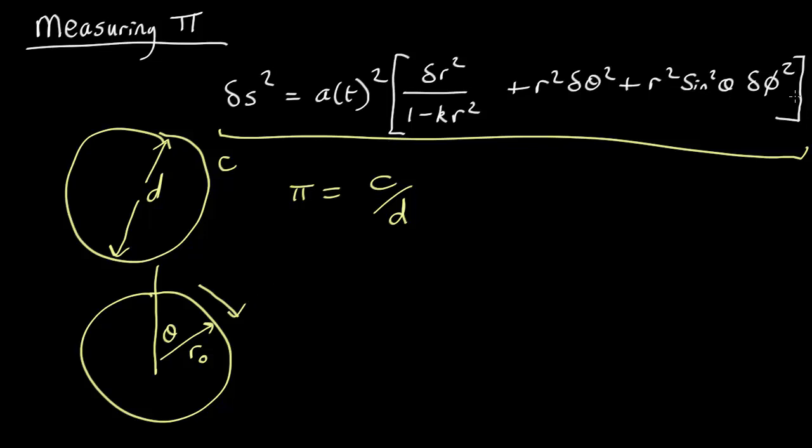We're not losing anything by making that assumption because we should get the same answer for any circle. So I have a circle of radius r naught made by varying theta all the way around with phi equals zero and no change in delta phi.